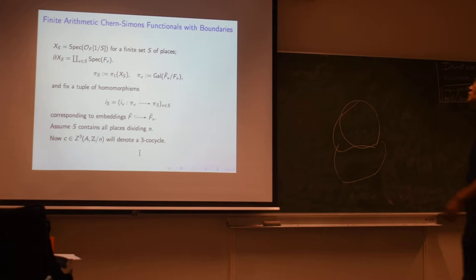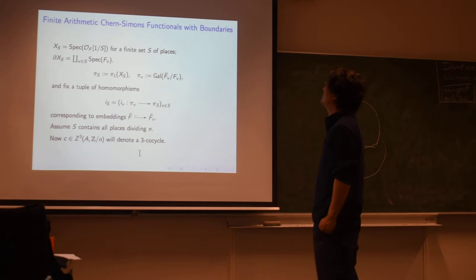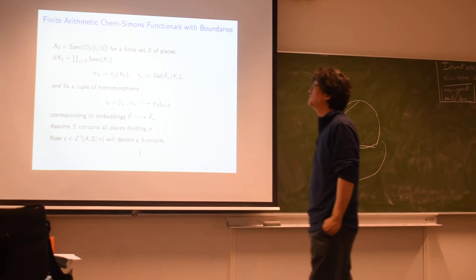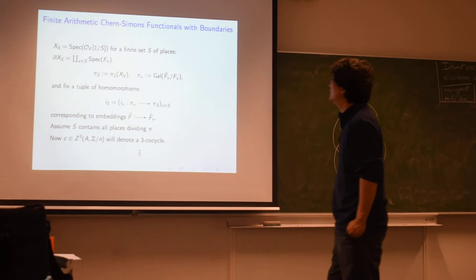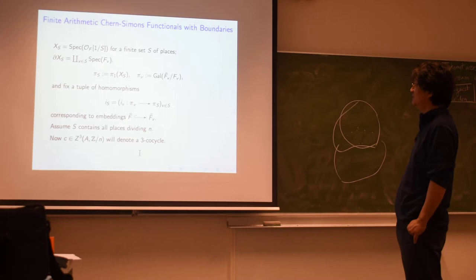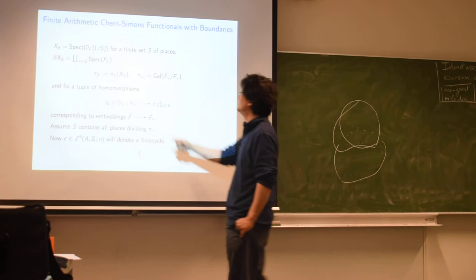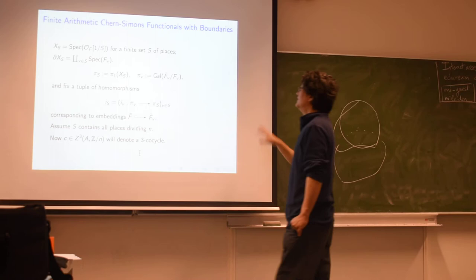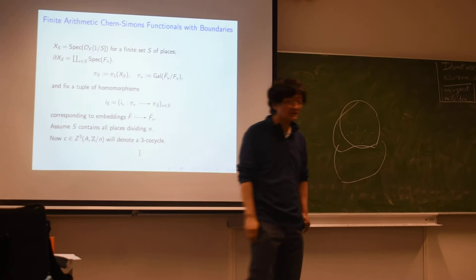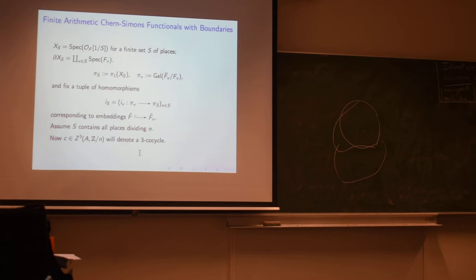So let me also briefly describe the case of trans-Chern-Simons functions for these arithmetic three-manifolds with boundary, because you'll also need this to compute the trans-Chern-Simons for this compact space. So if you have this case where you have S-integers, remember I denoted by boundary of X as the union of the spec of the completions at the places in S. πₛ is π₁ of Xₛ, and πᵥ is the étale fundamental group. I think I already used this notation. And we'll also fix a collection of homomorphisms from πᵥ to πₛ coming from a bunch of embeddings. We'll also assume that S contains all places dividing n.